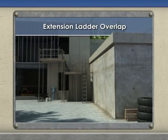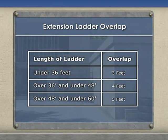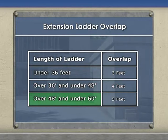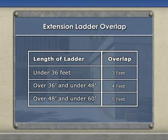Sections of extension ladders must overlap according to the following table: if the length of the ladder is under 36 feet, the overlap should be 3 feet; if between 36 and 48 feet, the overlap should be 4 feet; if between 48 and 60 feet, the overlap should be 5 feet.